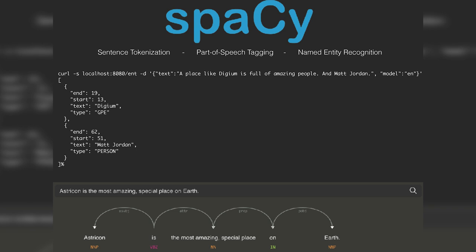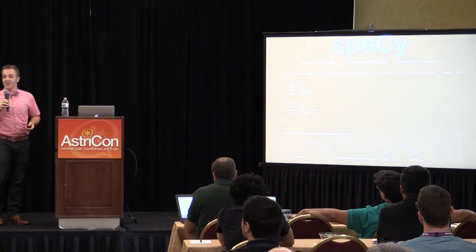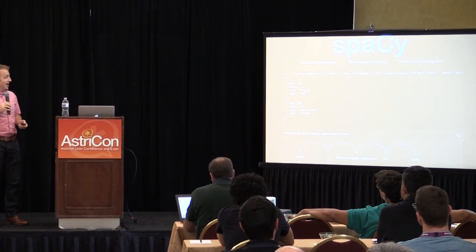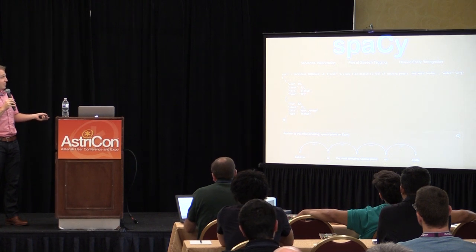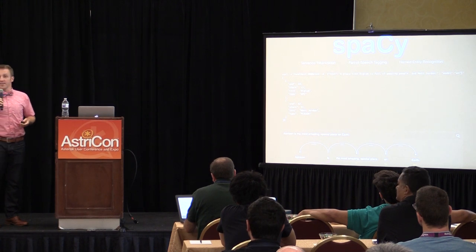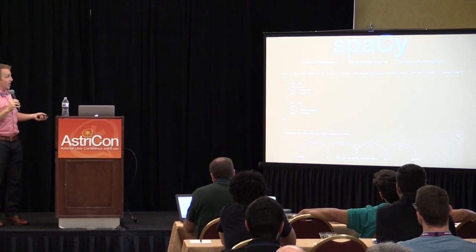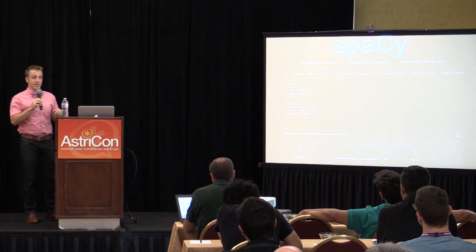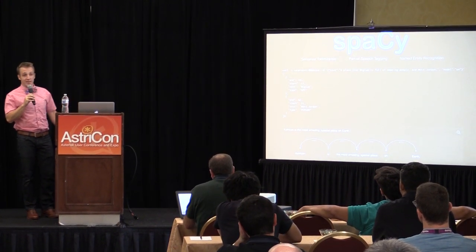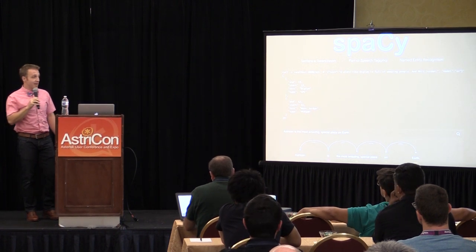SpaCy does lots of fun stuff: sentence tokenization, part-of-speech tagging, and named entity recognition. We pass a sentence into it with a curl script. For 'A place like Digium is full of amazing people and Matt Jordan' — it knows based on training data that Digium is most likely a proper noun for a place or entity, and it pulled out Matt Jordan as a person. It tells you the start and end positions. I have this running in a container on my laptop — you just curl it in and it takes a couple milliseconds to process these incredibly fast.